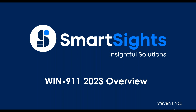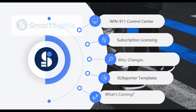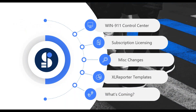What we're going to do today is give a brief overview of what's new in the software. Specifically, we'll talk about the main new component to WIN-911, which is called the Control Center. We'll talk about subscription licensing functionality, a few other changes we made, some integrations into Excel Reporter, and a few other things on the horizon for the end of the year. We'll go ahead and get started with the Control Center.